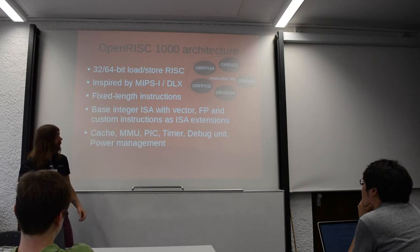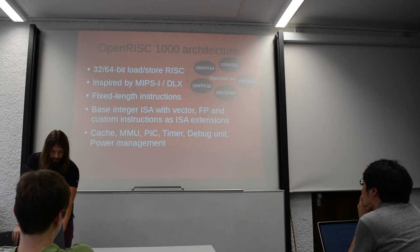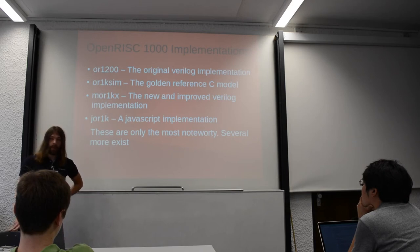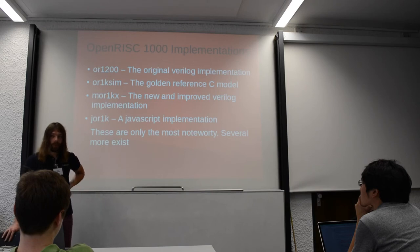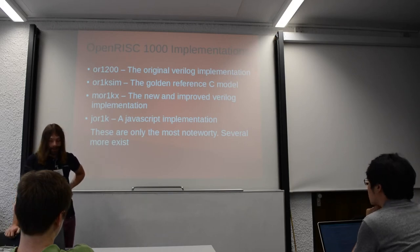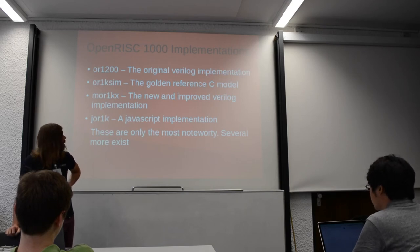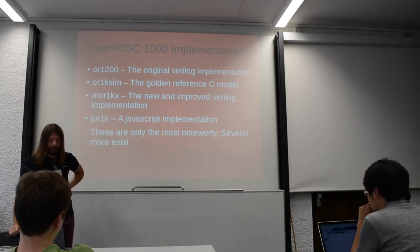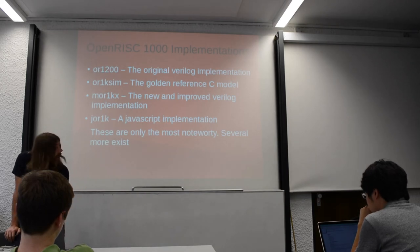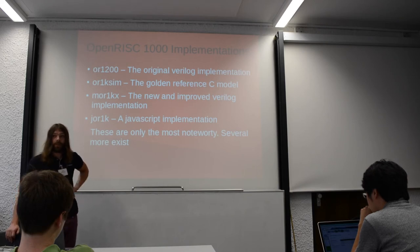The Orbis32 is the main integral ISA. The OR1200 was the original Verilog implementation, and we had OR1K SIM as the golden reference C model. A few years ago, Julius and Stefan started working on MOR1KX, which is supposed to be a replacement for the OR1200 — more modular, faster, and better in every way. We also have the JOR1K, from Sebastian, which is a JavaScript implementation, so you can run OpenRISC with Linux and graphics in your browser, which has lowered the barrier of entry for many people.